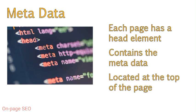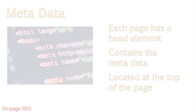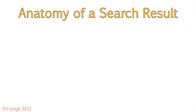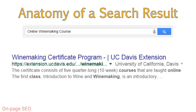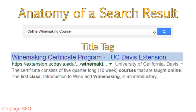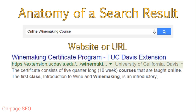Let's go back to our first example so we can view the various metadata elements. This is a search result for the UC Davis winemaking certificate program. To get this result to display, I searched Google for 'online winemaking course.' The area in blue is what we call the title tag. The title tag describes the title or name the webmaster gave to this specific page. The area in green is the website address or URL of the page. This isn't actually part of the metadata that you can define — search engines will pull the URL from the page it is analyzing.